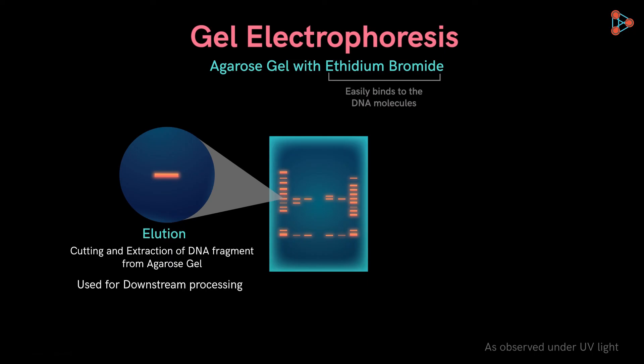This was the simple explanation of how any gel electrophoresis technique works. It is considered as one of the very important techniques used in recombinant DNA technology. To learn more about such interesting processes, stay tuned to our channel and do not forget to subscribe. Happy learning!